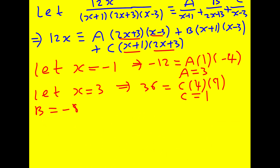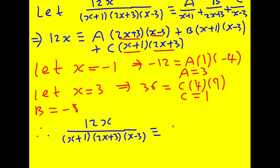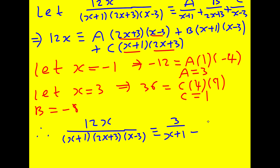I've run out of space, so I'll delete the working to fit the final answer. You do need to be able to deal with three factors at A-level; four would be more of the same. Therefore, 12x over (x plus 1)(2x plus 3)(x minus 3) is identically equal to 3 over (x plus 1) minus 8 over (2x plus 3) plus 1 over (x minus 3).